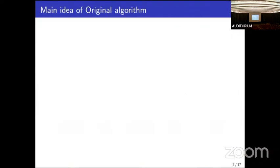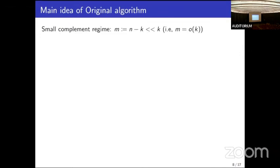Having described the results, let's look at the algorithm. We are only interested in the regime where the size of the complement is small, because that's where the speedup is. Consider the state psi to be the uniform superposition over all possible elements — we are working with the set of n natural numbers.